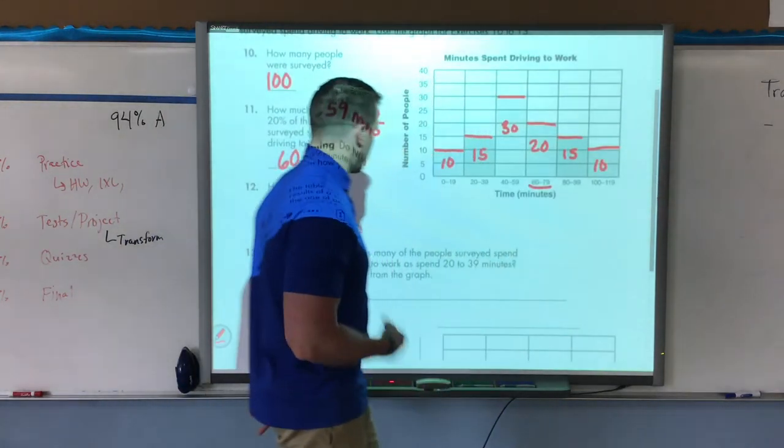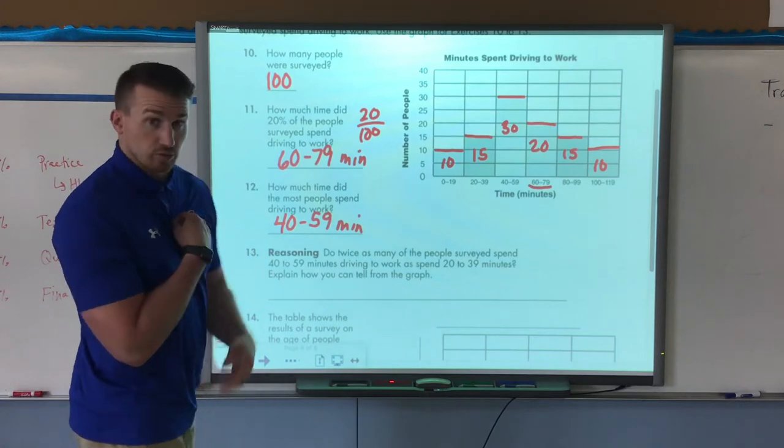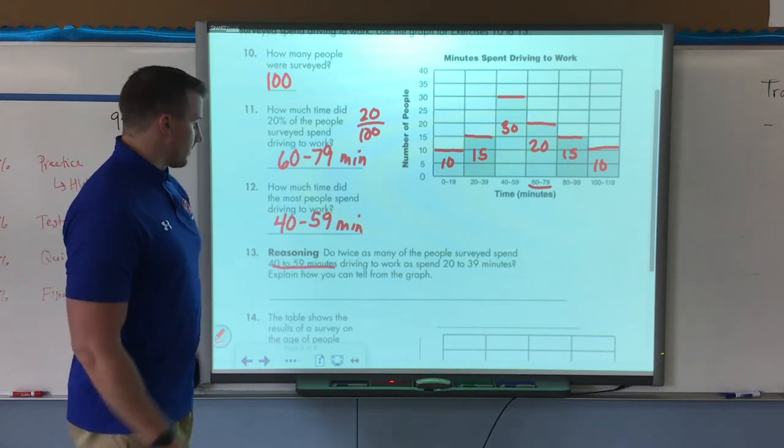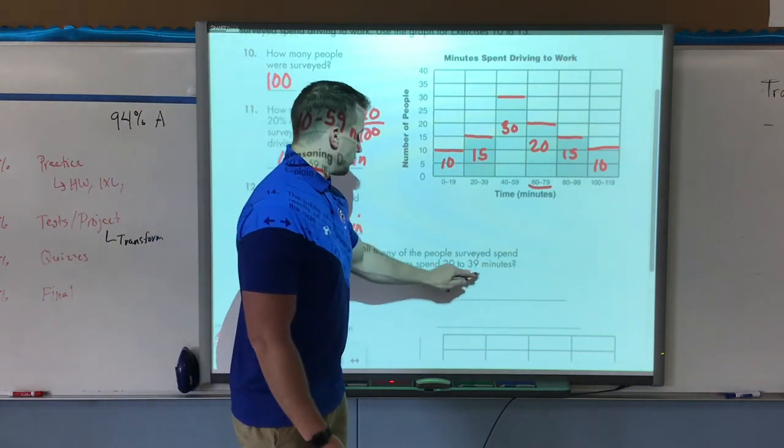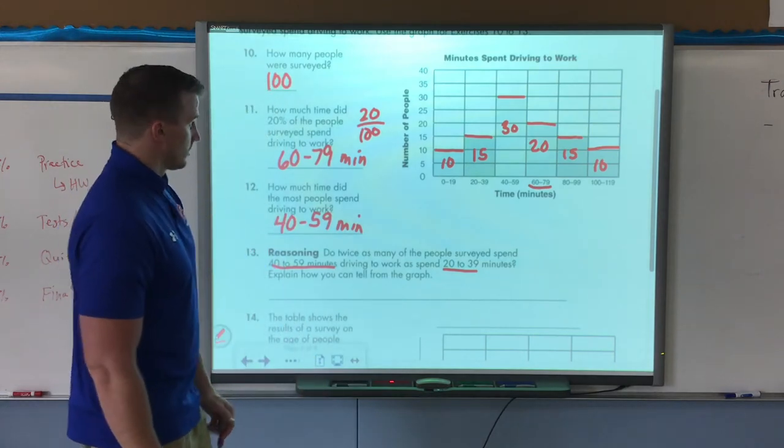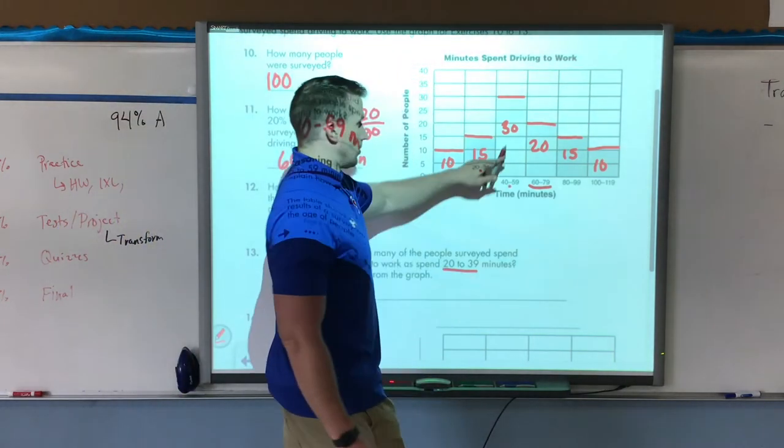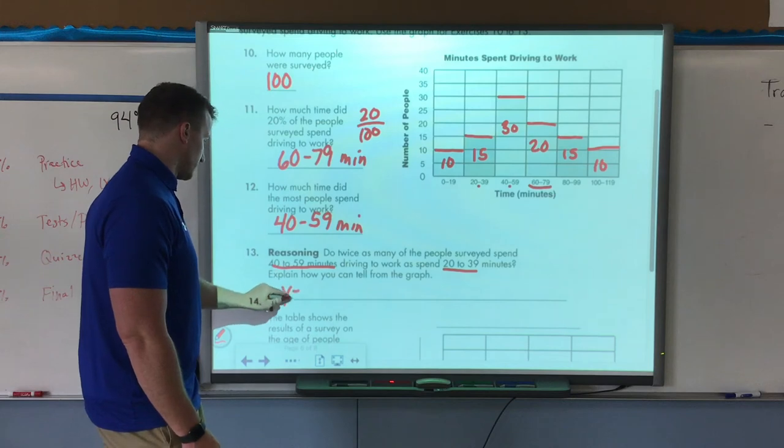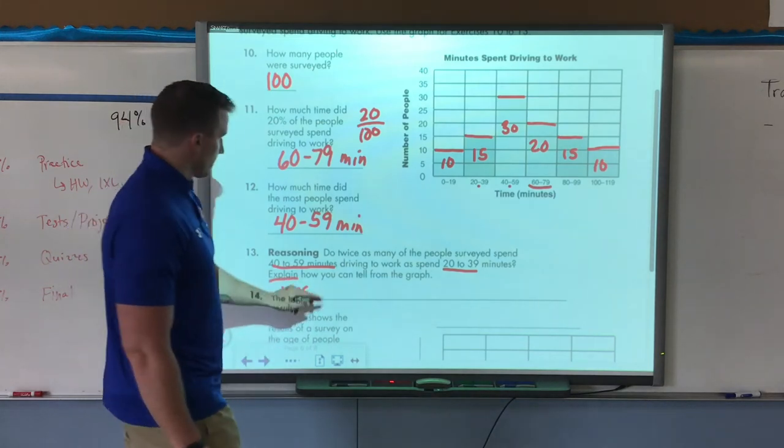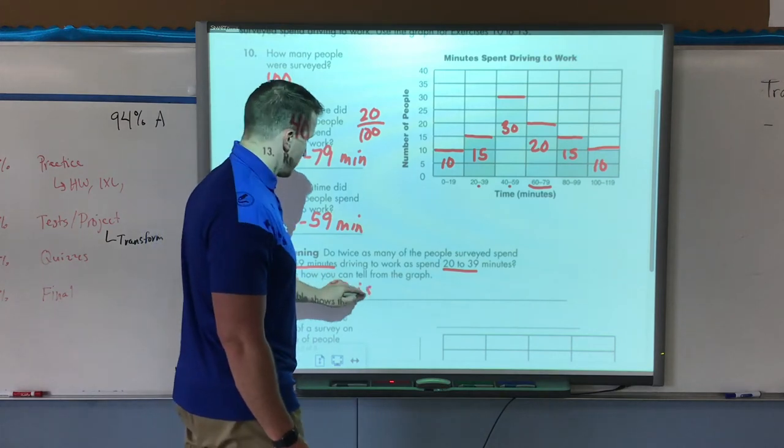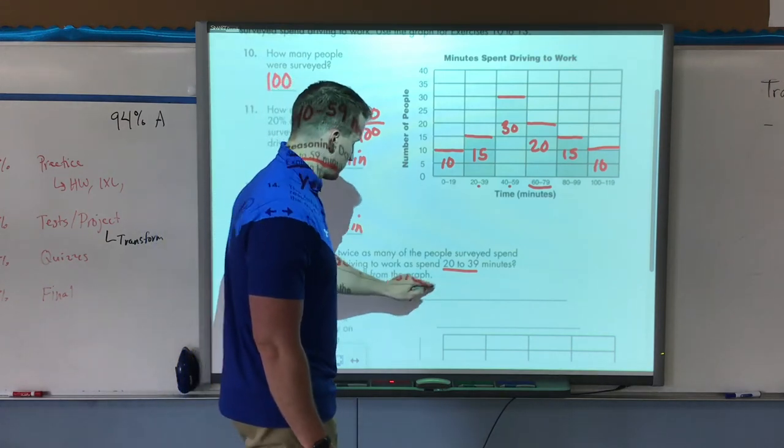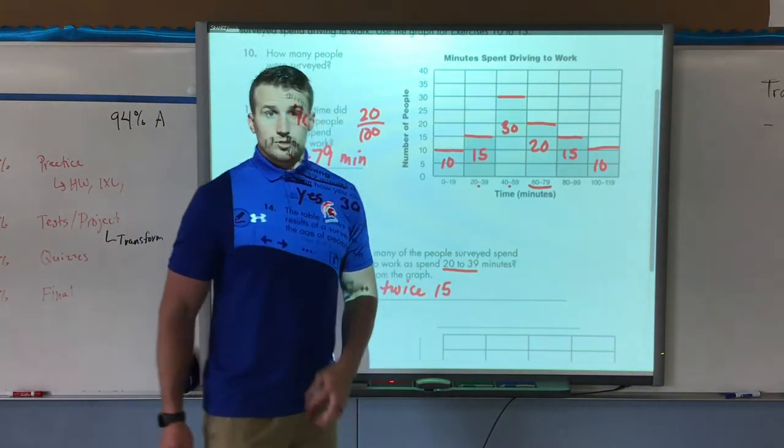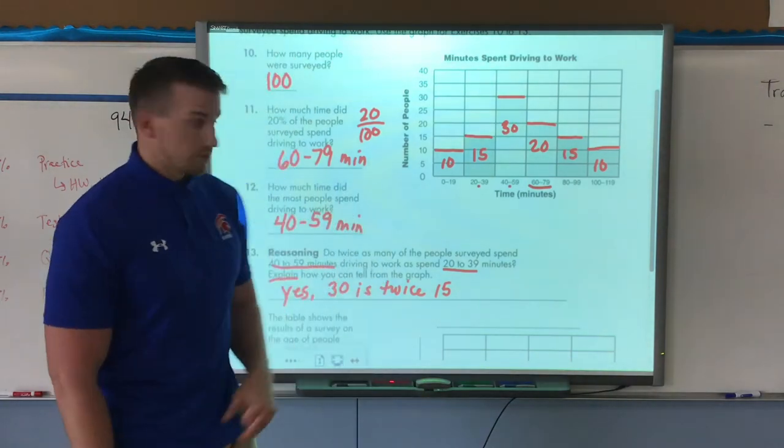One more question about this histogram. Do twice as many people surveyed spend 40 to 59 minutes driving as 20 to 39 minutes? So we're comparing these two intervals. Is 30 two times as much as 15? The answer is yes. For our explanation we would say that 30 is twice 15, because there was 15 people here, two times 15 we know is 30, so that's twice the amount.